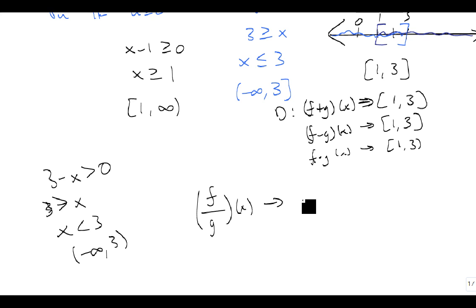So the domain of this one is from 1 to 3 with a parenthesis, and that should be a square bracket. There we go. So these three are square brackets for both with the square roots.